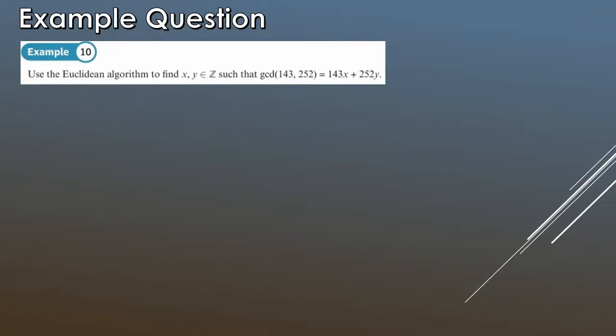Here's an example question. We have to use the Euclidean algorithm to find integers x and y such that the GCD of 143 and 252 is equal to 143x plus 252y. To speed things up, I've worked through the Euclidean algorithm already. If you want more practice with it, pause the video and see if you can get the same values. If you're okay with it, you can just skip along with us.